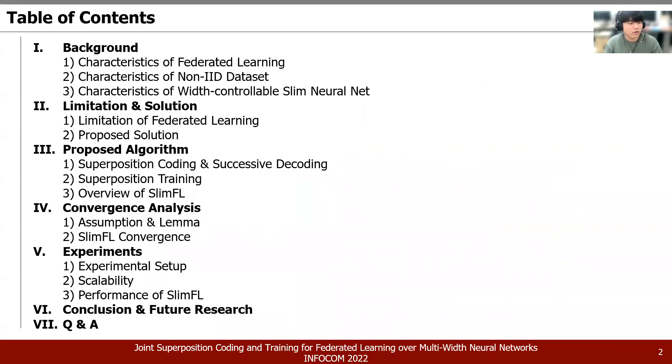The table of contents of this study is as follows. First, I will briefly explain the background knowledge, then I will go through the limitations. Thirdly, I will explain our proposed algorithm, then I will explain how we proved that our proposed method has successfully converged. Finally, I will summarize the results of the various experiments.